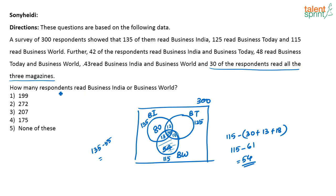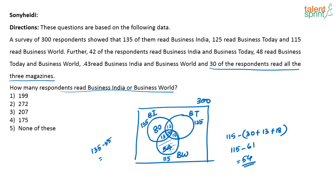The question asks: how many respondents read Business India or Business World? A respondent should read Business India or Business World — any one paper at least. He can also read both; that is included. So we add all the shaded values: 80 plus 12 plus 30 plus 13 plus 18 plus 54. That should be the answer.